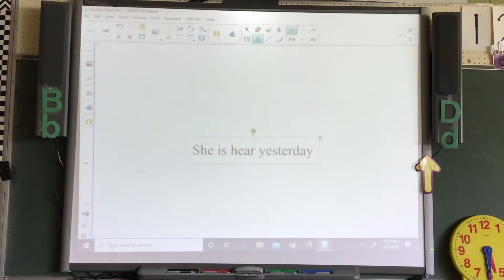This 'hear' means you hear something. We need it to be the 'here' that is a place, so it's spelled h-e-r-e. She is here yesterday. Doesn't make sense, does it? We do need a period. If it happened yesterday, then you have to change 'is' to 'was.' She was here yesterday.